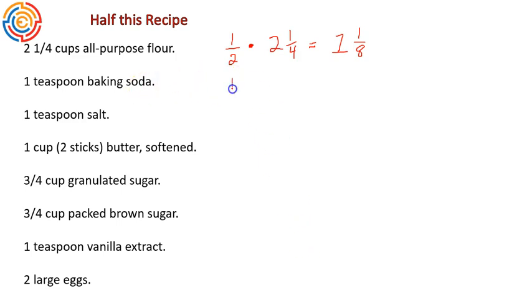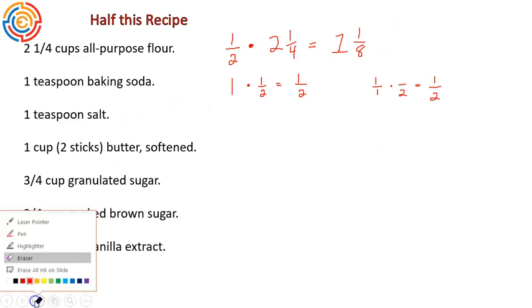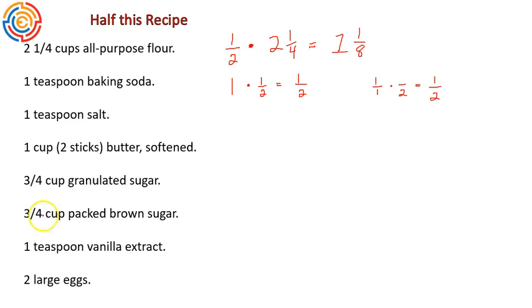The ones that are whole numbers are sometimes a little bit easier. One teaspoon of baking soda is one times one-half, which gives us one-half. If we want to see that fully displayed, one is equal to one over one. When we multiply times one-half, it gives us one over two. Remember, when we're multiplying, we multiply numerator times numerator and denominator times denominator. So one times one gives us one, and one times two gives us two. That would be half of a teaspoon.